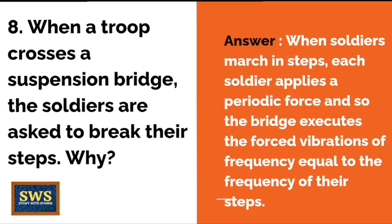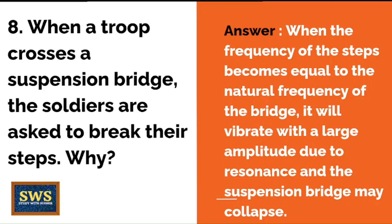When a troop crosses a suspension bridge, the soldiers are asked to break their steps. Why? When soldiers march in steps, each soldier applies a periodic force, and so the bridge executes forced vibrations of a frequency equal to the frequency of their steps. When the frequency of the steps becomes equal to the natural frequency of the bridge, it will vibrate with a large amplitude due to resonance and the suspension bridge may collapse — which is why they are asked to break their steps, meaning walk in an irregular manner.